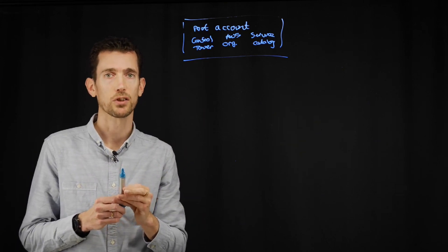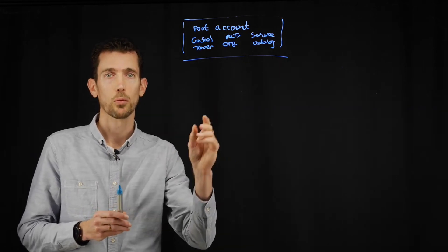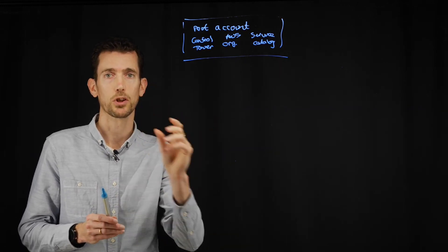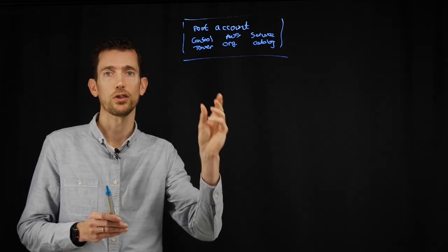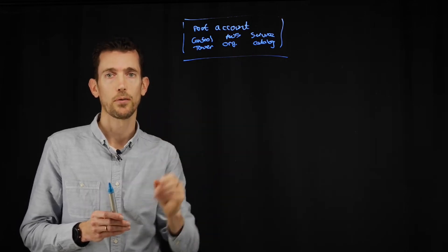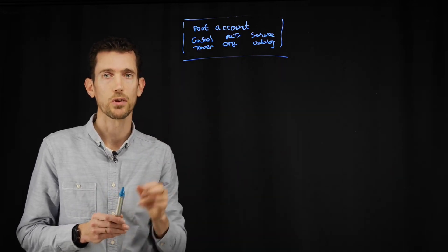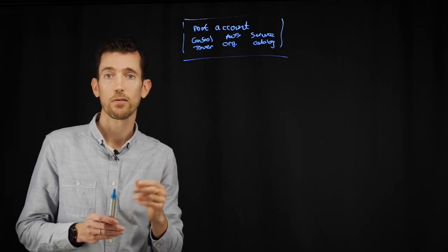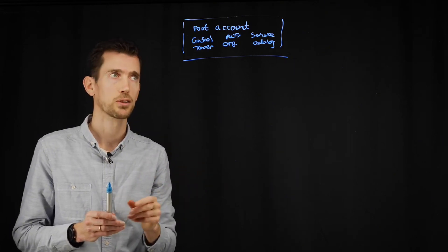AWS organisations allow you to have organisational units, which like any large business, you'll have different areas. This allows you to split up your footprint into different organisational units, which we'll talk about in a minute. If you're familiar with Azure, these are similar to management groups.